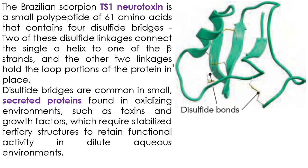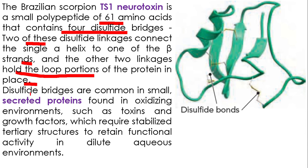This is the role of the disulfide bond. This is a disulfide bond formed between two parts of the same polypeptide chain. This is the Brazilian scorpion TS1 neurotoxin. It consists of only 61 amino acids and four disulfide bridges. Two of these bridges connect the single alpha-helix to one of the beta strands, while the other two linkages fold the loop portions. Disulfide bridges are common in secreted proteins found in oxidizing environments, such as toxins, blood factors, and hormones like insulin. They are important in stabilization of the tertiary structure.